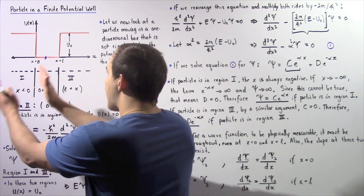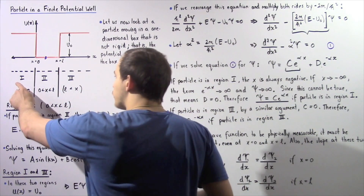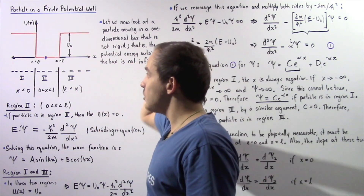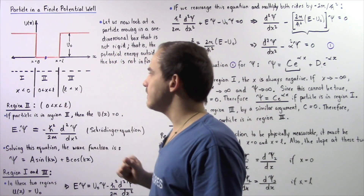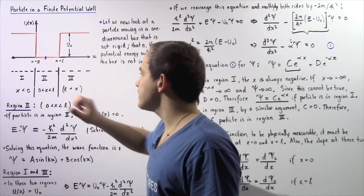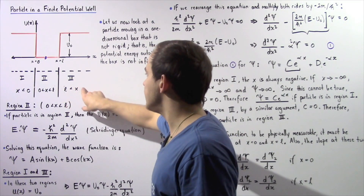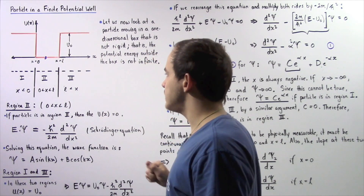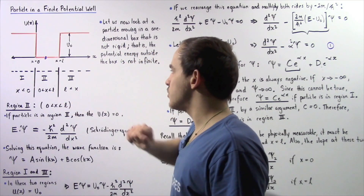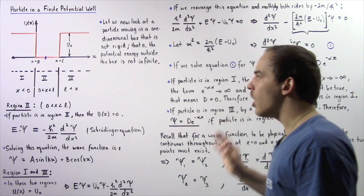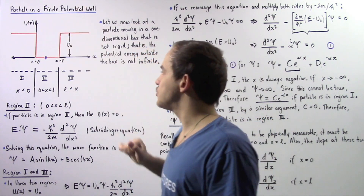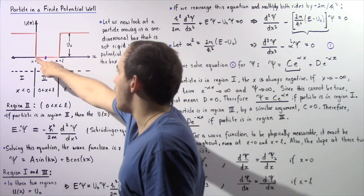Let's divide our space into three regions. Region 1 is anywhere below x equals 0, region 2 is inside the potential well between x equals 0 and x equals L, and region 3 is to the right of x equals L. If the particle is in region 1 or region 3, the potential energy equals the constant u₀. If the particle is inside the potential well, the potential energy equals 0.